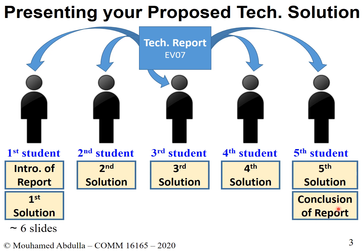The slide count is roughly six slides for the first student, five slides for the middle students, and six slides for the last student who also covers the conclusion. It may feel a bit unfair, but we need to have the introduction and conclusion covered somewhere. The assignment of who is first is somewhat random since it depends on the order solutions appear in your EV7.